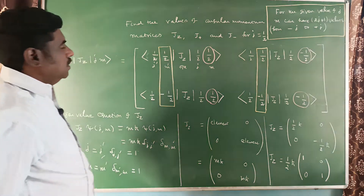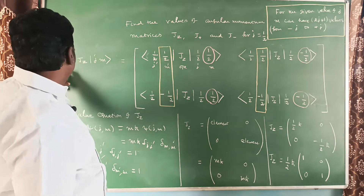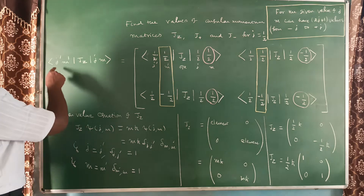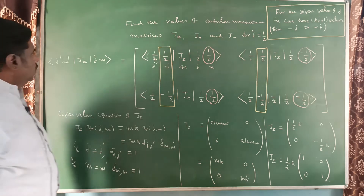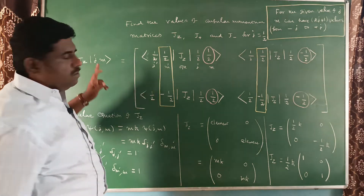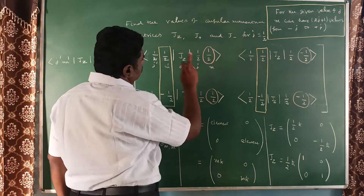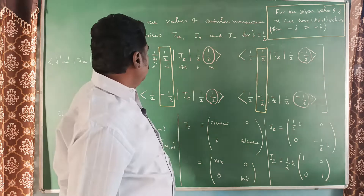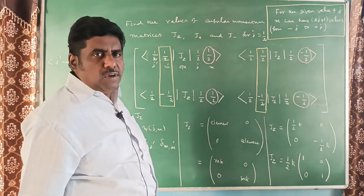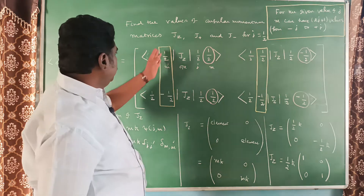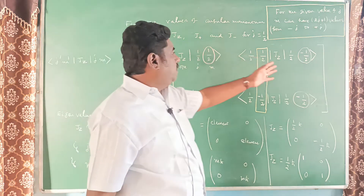The way of writing the J_z matrix uses the representation: the matrix element is ⟨J', M'| J_z |J, M⟩. Here J' is always equal to J, so in all cases J' is 1/2 and J is 1/2. The variation is seen only in the values of M' and M. M and M' each have 2 values: plus 1/2 and minus 1/2. The variation in M' is represented column-wise, and the variation in M is represented row-wise.